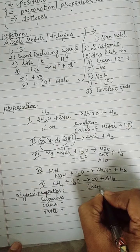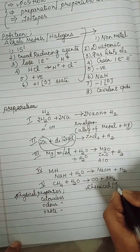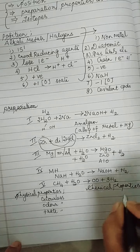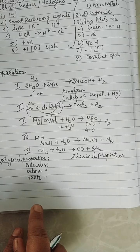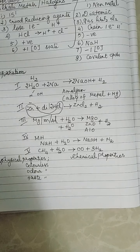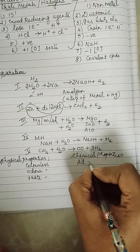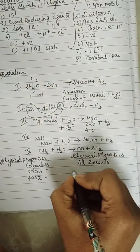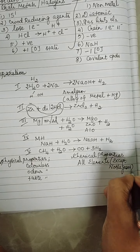Moving to the chemical properties of hydrogen — physical properties, preparation, and chemical properties are not in the final exam, so I am just highlighting the key points. At room temperature, hydrogen is less reactive. However, it can form compounds under suitable conditions with almost all elements except noble gases, which are inert and will not react with any element.